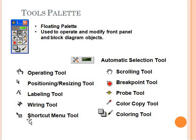The tool palette is used to change the function of the mouse cursor. With the hand icon, we have the operating tool. We have an arrow for positioning or resizing tool. We have breakpoint tool, color copy tool, shortcut menu tool, and wiring tool. Wiring tool is important because we need it to connect our front panel indicators and controls with each other. Generally, if we click on the automatic selection tool bar, it will automatically switch to different wiring tools, scrolling tools, or positioning tools by itself.